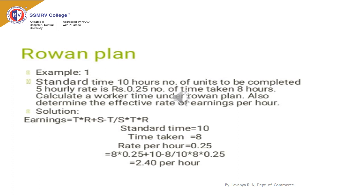We will see the calculations of wages under the Rowan Plan. The formula used is: time taken into rate per hour, plus standard time minus time taken by the worker, divided by standard time, into time taken by the worker into rate per hour. Time taken by the worker is 8, so 8 into rate per hour ₹0.25, plus standard time 10 hours minus time taken 8 hours — he is saving 2 hours and is entitled to get a bonus — divided by standard time, into time taken 8 hours into rate per hour ₹0.25. Earnings under the Rowan Plan is ₹2.40.